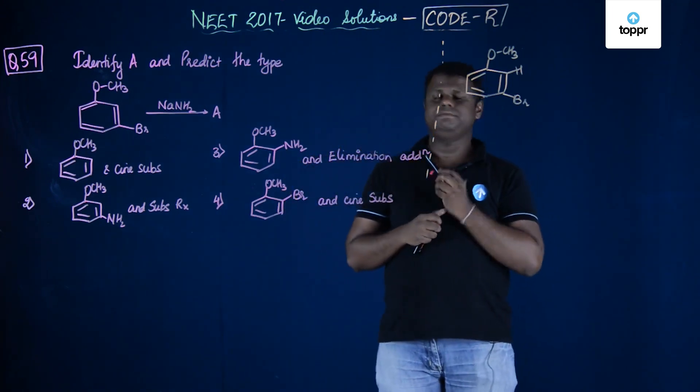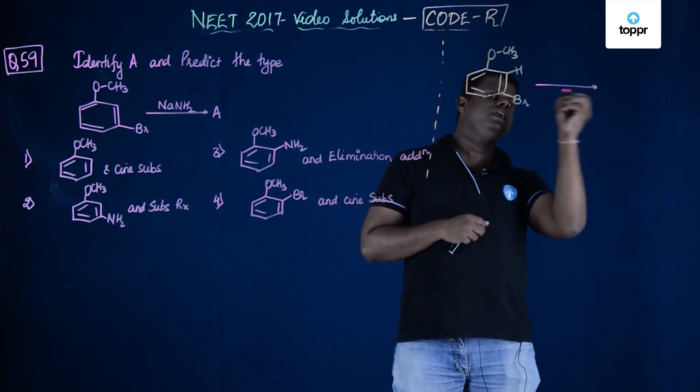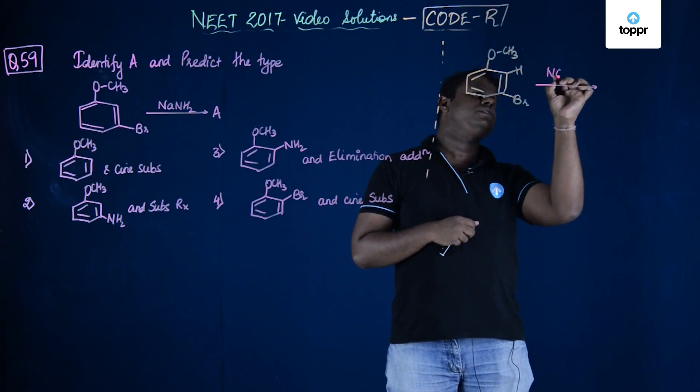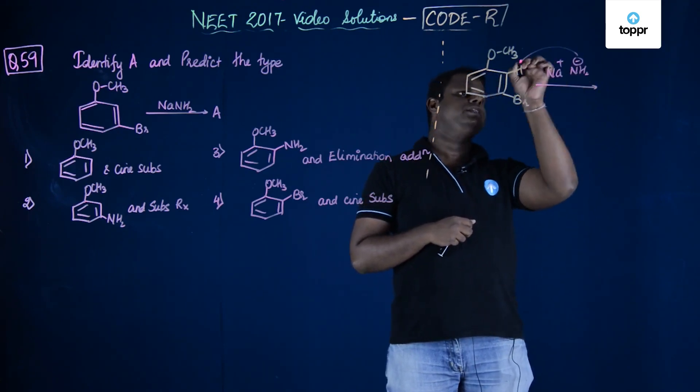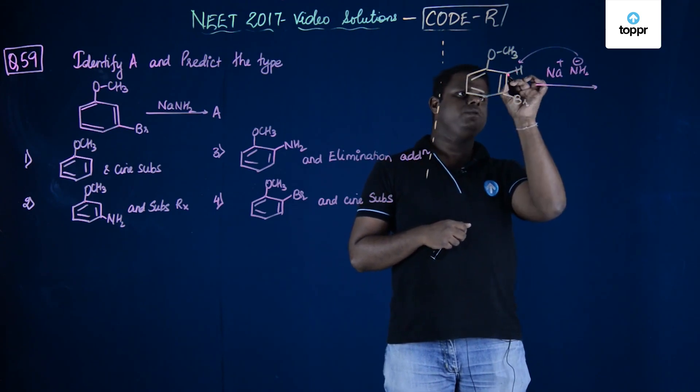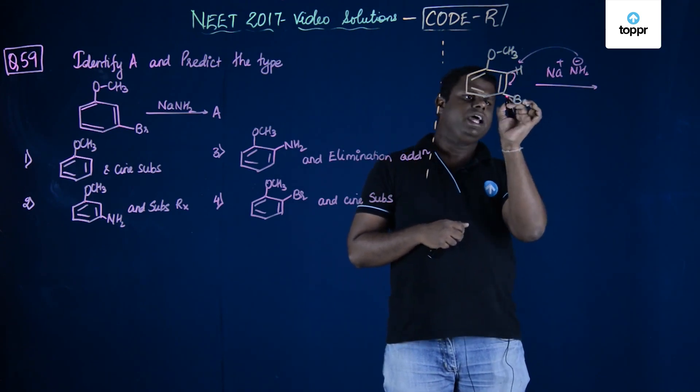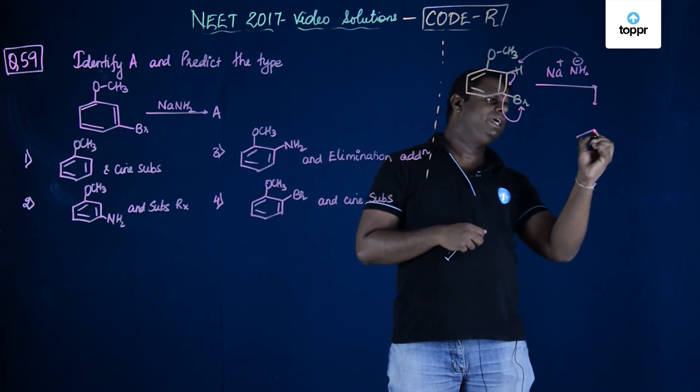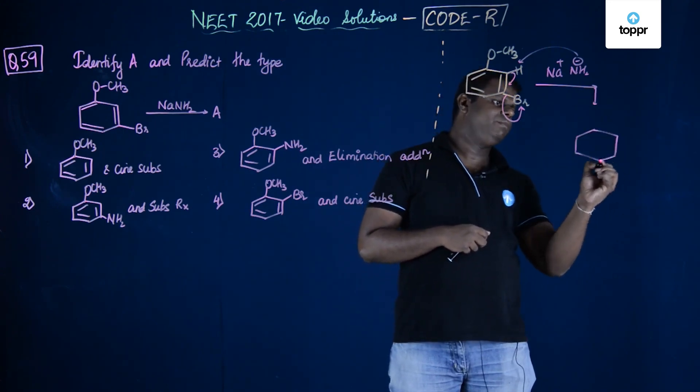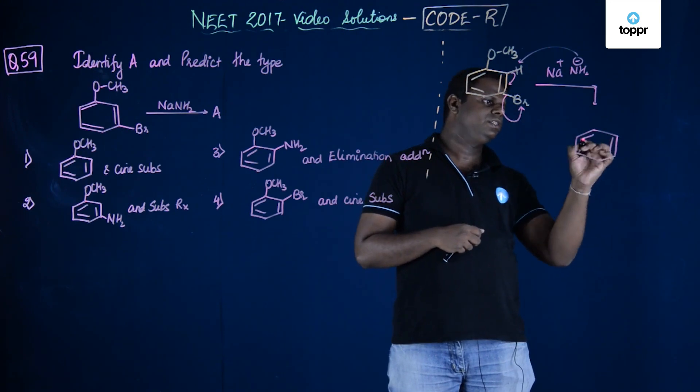NaNH2 - NH2 is basically a base, right? If you could see here this base Na+ and NH2-. This would deprotonate this as a result of which hydrogen would be giving the electron to the benzene ring and bromine will be acting as a leaving group as a result of which you would be getting a different type of intermediate. I think I've already told you this.